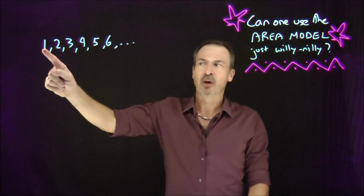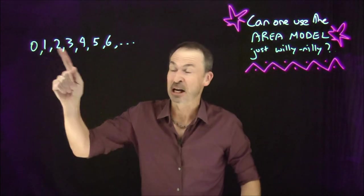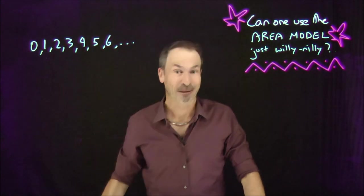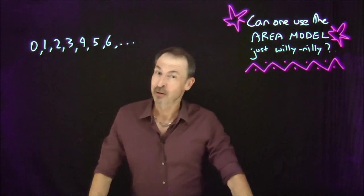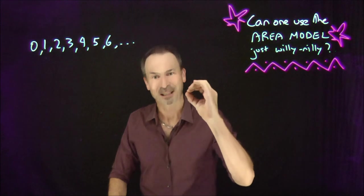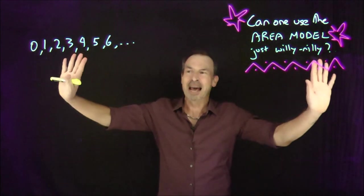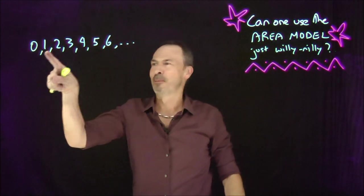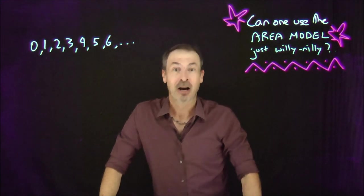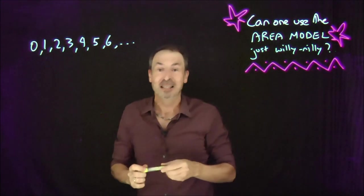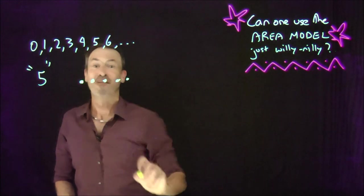Some people might argue there's another number at the beginning of the list: zero. We humans debated that issue for many centuries — is zero a counting number or not? Because here's the trouble: I know there are zero giraffes in this filming studio right now, but is that because I observed a lack of giraffes, or did I actually count zero giraffes? That's the issue with zero. For what we're doing today, I like to count dots. When I write five, I'm thinking of a picture of five dots which I can count to five.